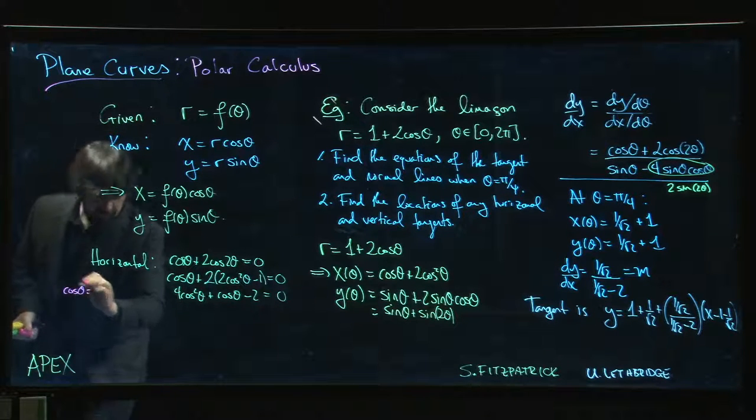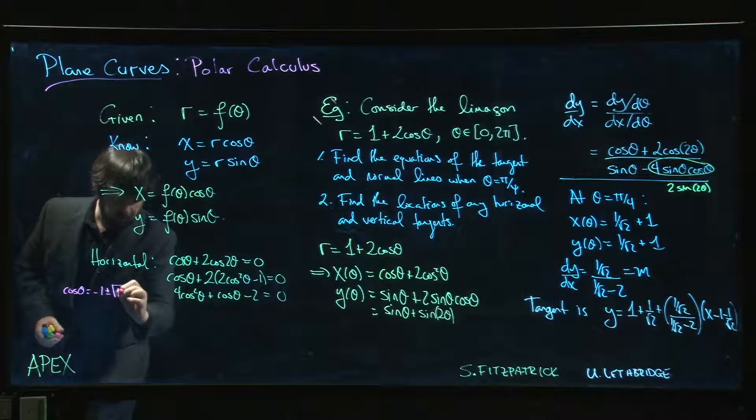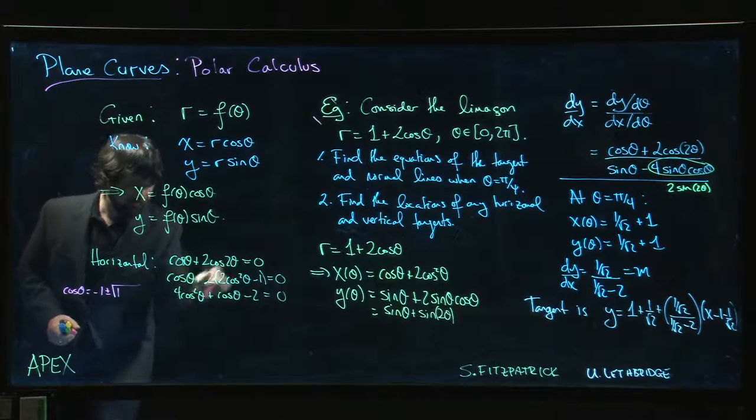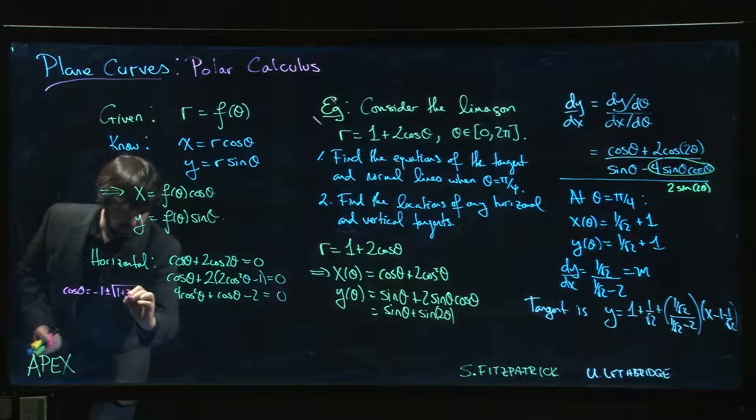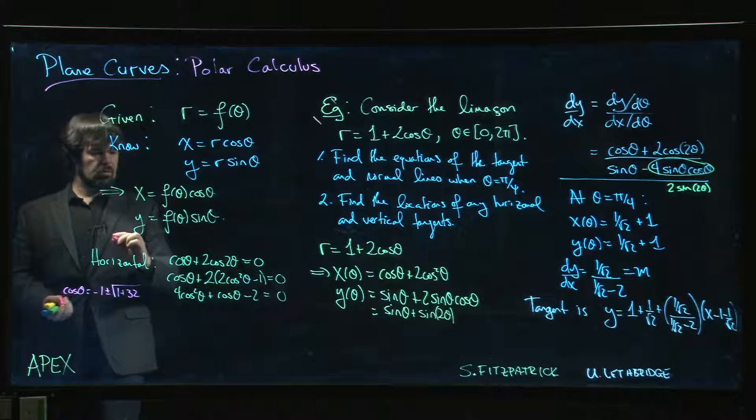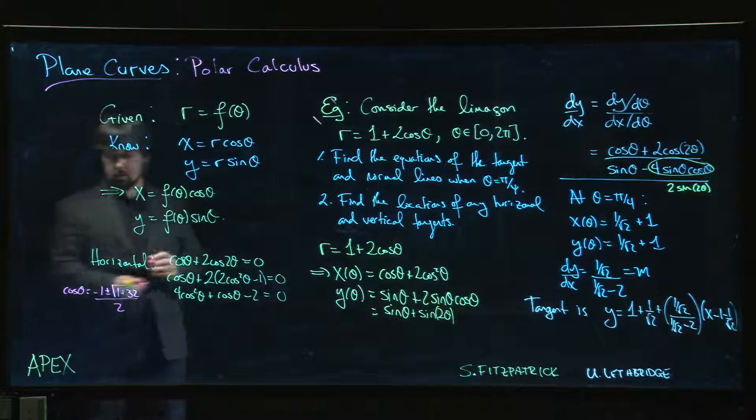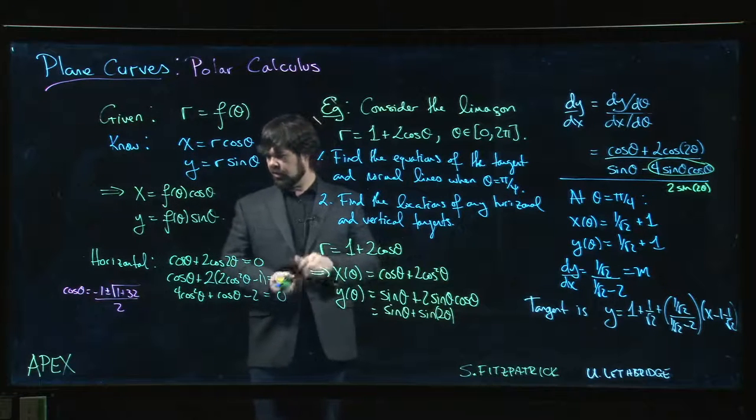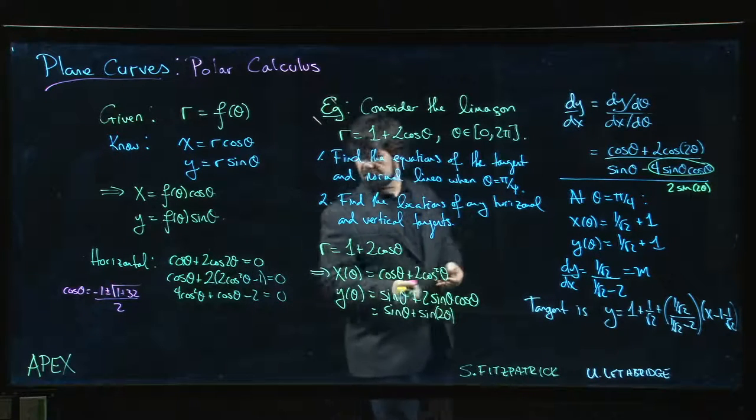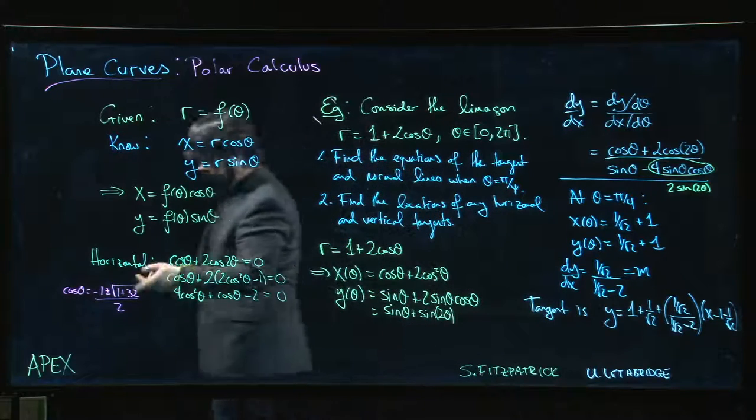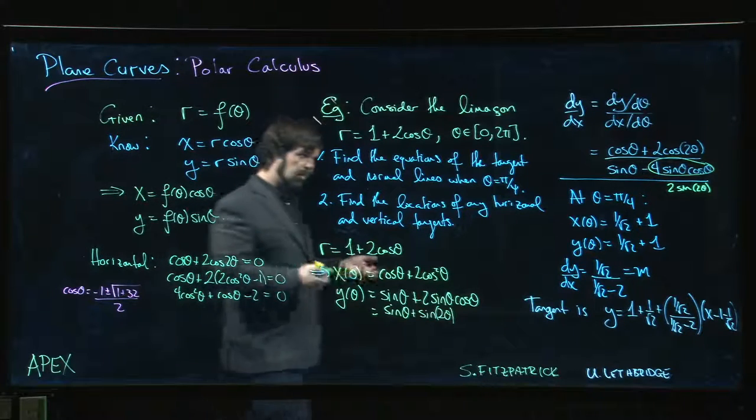Cos theta would be what? Quadratic formula says it's going to be minus 1 plus or minus square root of 1 squared minus 4 times 4 times minus 2. So minus minus becomes plus, 1 plus 32. 4 times 4 is 16 times 2 is 32. Over 2. Well, I can solve for those values of theta, but they don't come out particularly nicely. Nonetheless, I can work that out. 1 plus or minus root 33 over 2. We can put that into our calculator. We can figure out the angles where we get horizontal tangents.